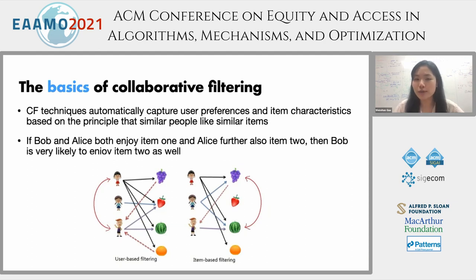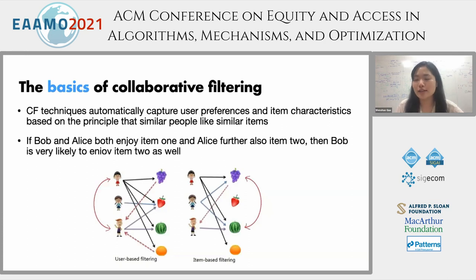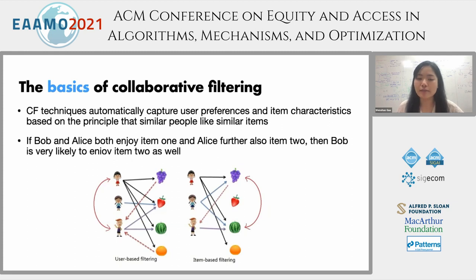As an example, if two users, Bob and Alice, both enjoy item one, and Alice also further enjoys item two, then the algorithm will try to predict that Bob is also likely to enjoy item two. This could be generalized to many users and items. There are also different approaches like user-based collaborative filtering, which matches similar users, or item-based collaborative filtering, which is more based on similar item types.